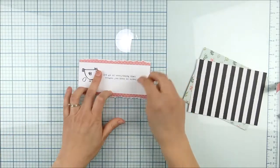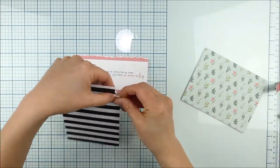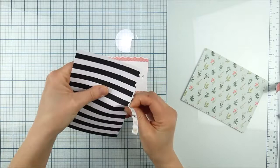All right, these were scraps from a pattern paper pad from Cartabella called Flower Garden, the six by six paper pad.